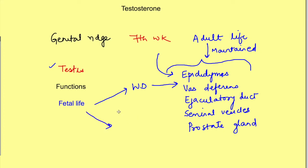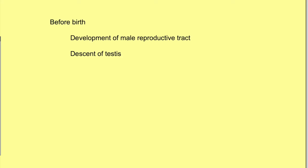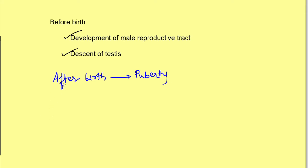Just before birth, testosterone is required for the descent of the testis from the abdomen to the scrotum. So these are the functions of testosterone before birth: development of the male reproductive tract and descent of the testis. After birth and till puberty, testosterone levels actually decline, and it again comes into role at puberty and then throughout adulthood.